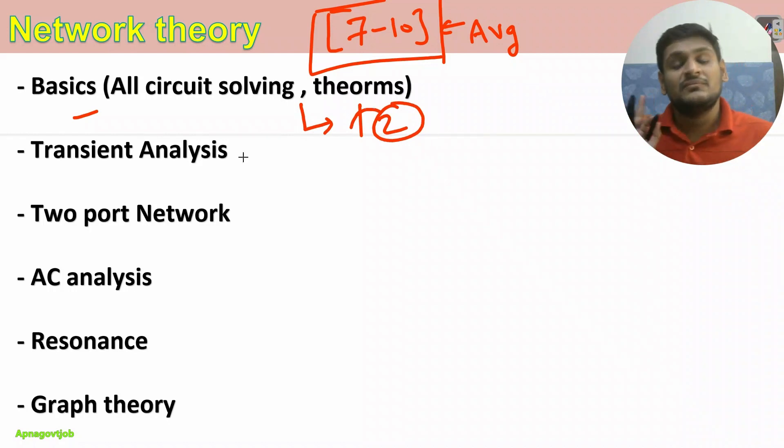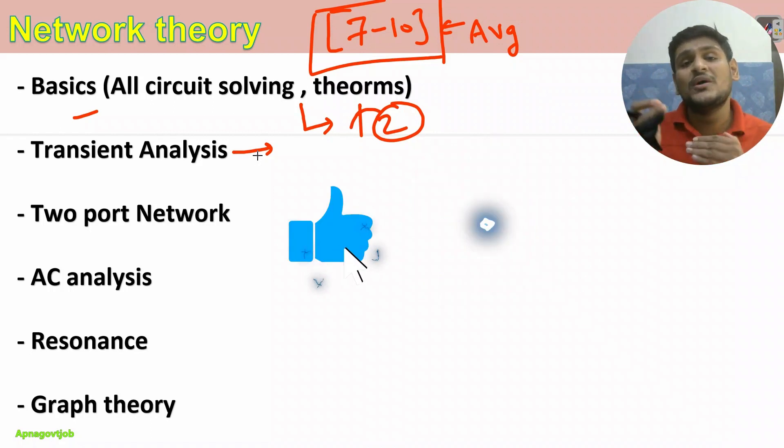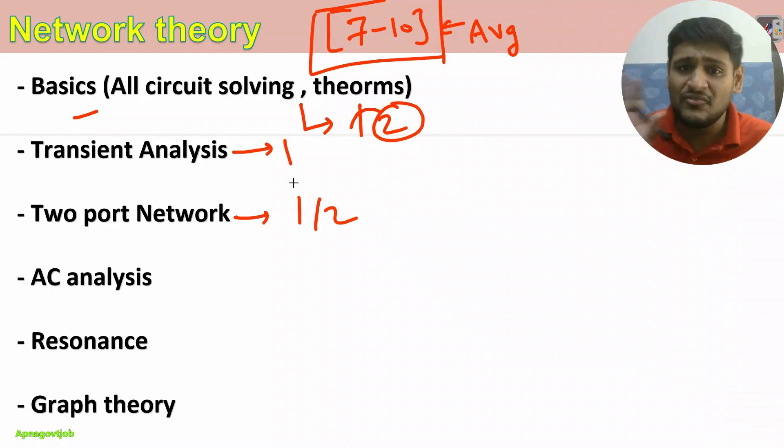Then transient analysis. Last time for one shift only they asked transient, for other two shifts there was no transient question. So it's better to focus on transient but not that much. Then two-port network, you will get one or two questions depending on your shift. Then AC analysis, very important, you can expect two to three questions. Then resonance and last is graph theory. From graph theory one question, from resonance one question you can expect.